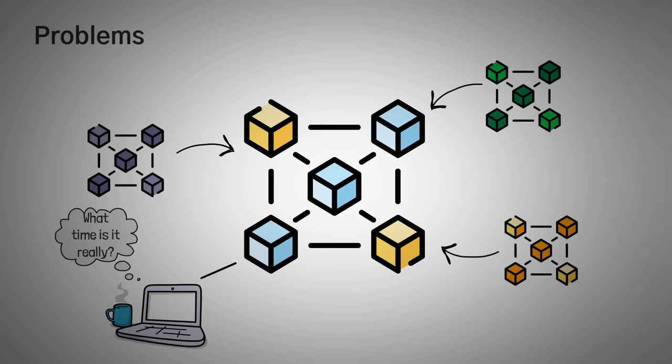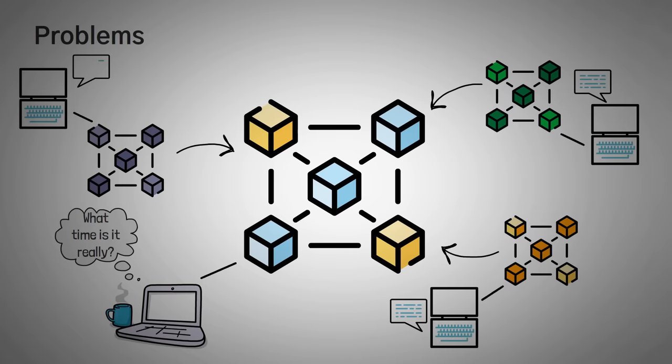On other blockchains, the nodes, which is a fancy word that means computers, on the network have to chat back and forth, back and forth until they agree on a time. And they have to do this before submitting a block, and in the computer world, this chatter can take up a lot of time.